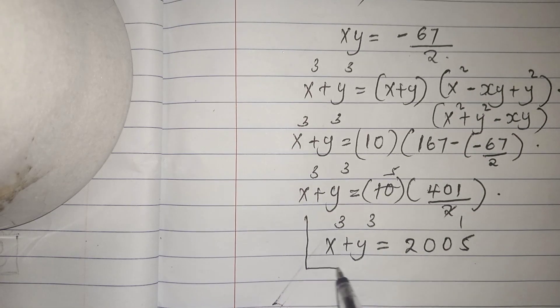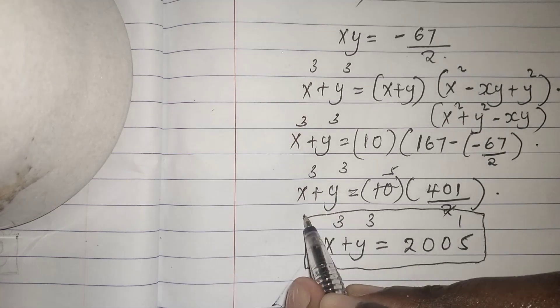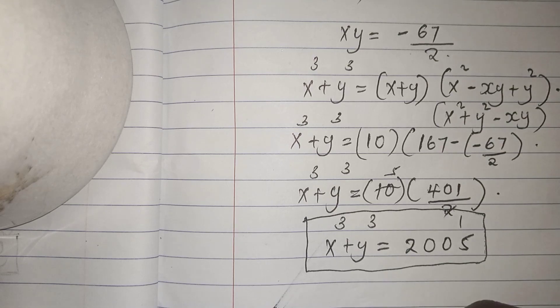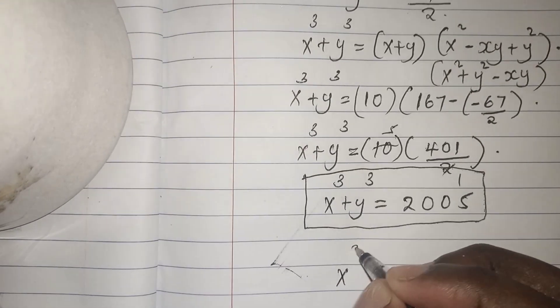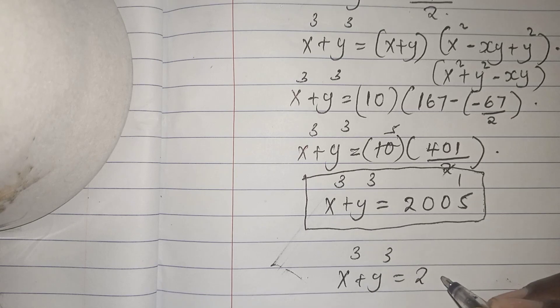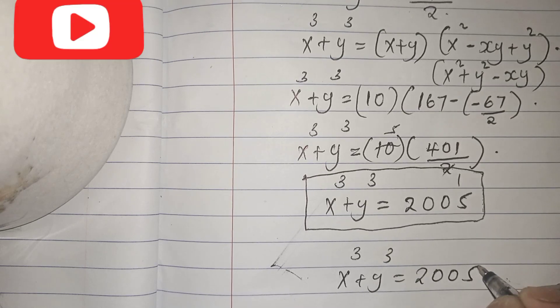And this is our final solution. x cubed plus y cubed equals 2,005.